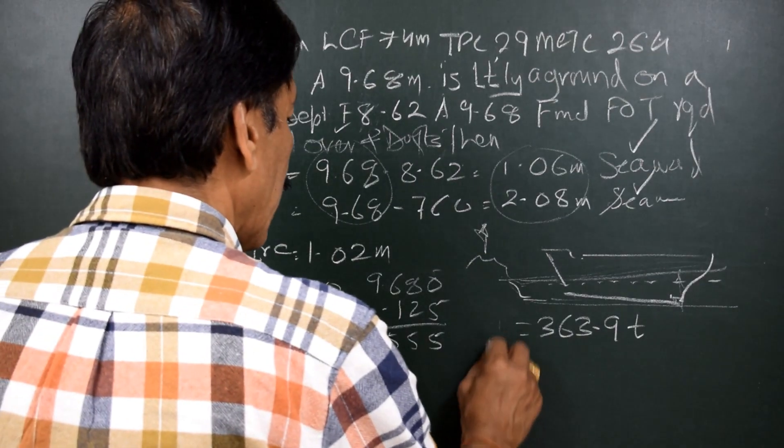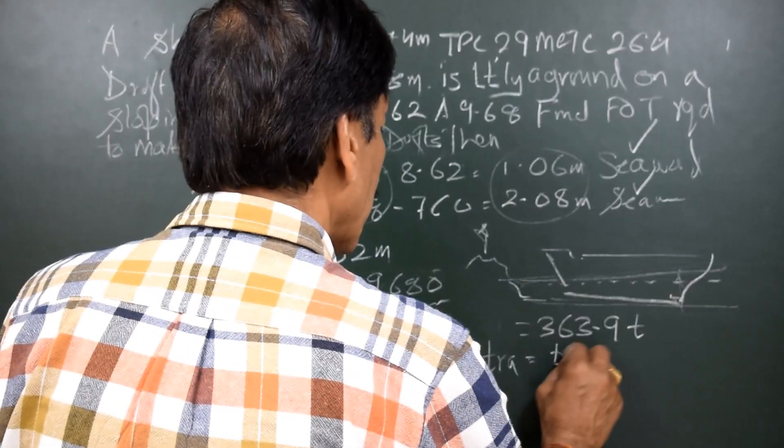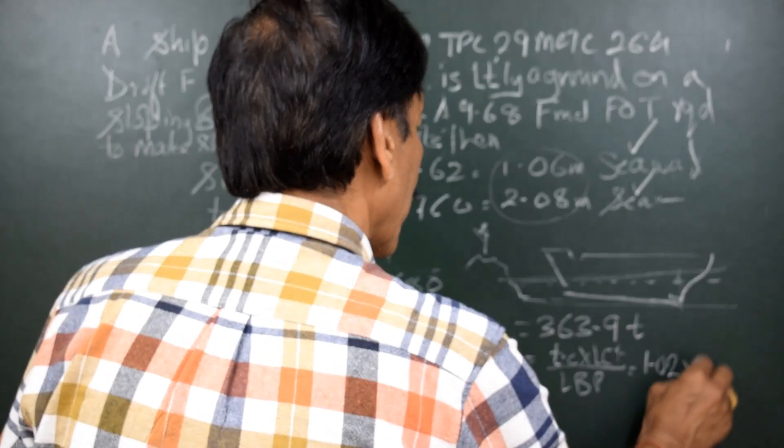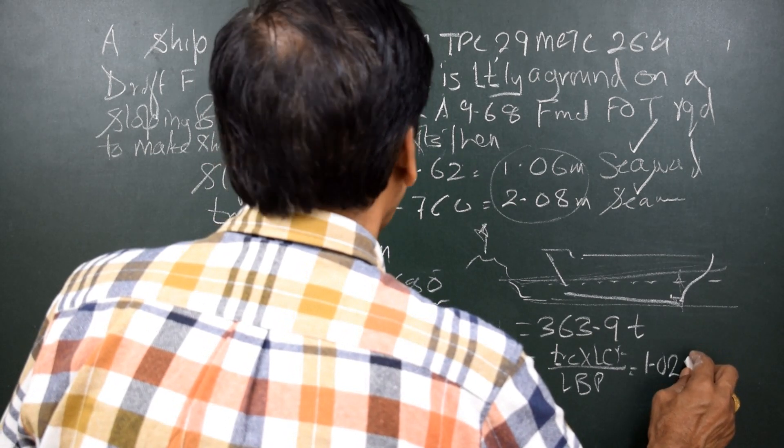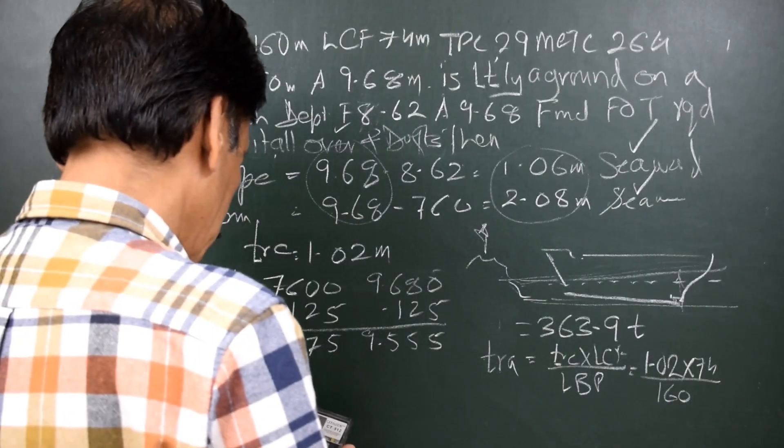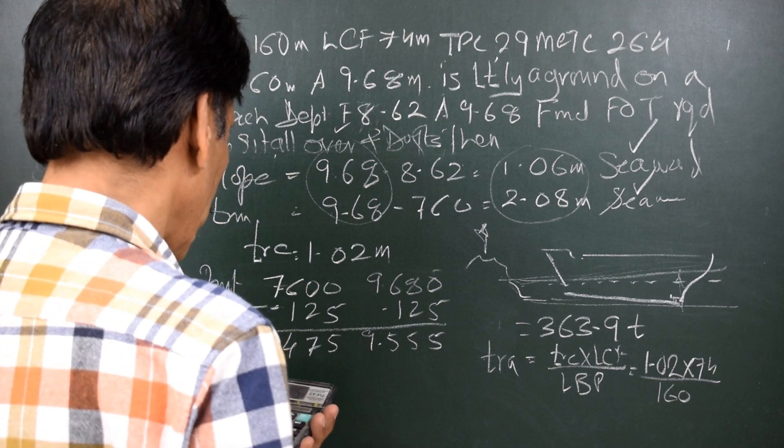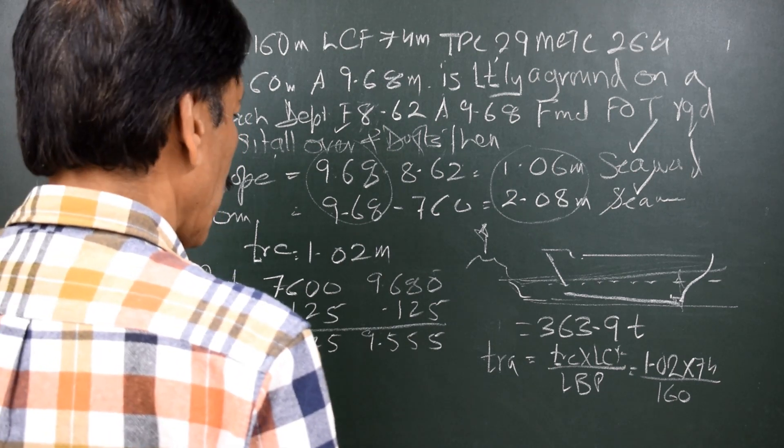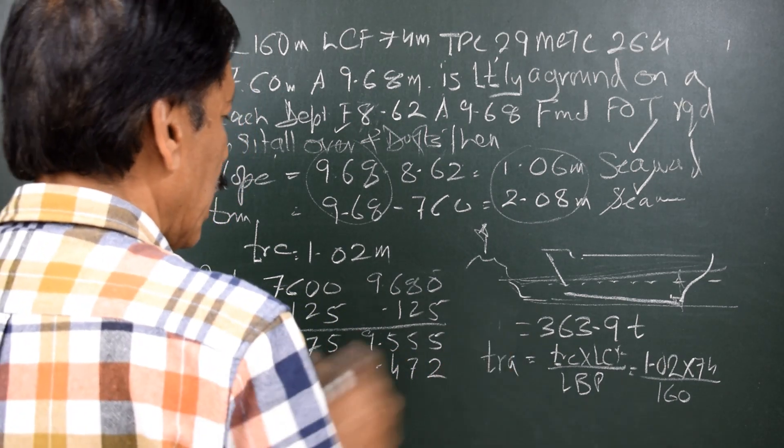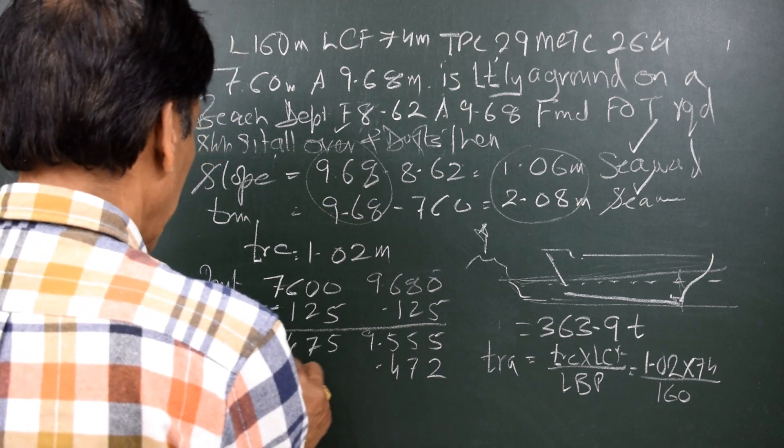This will cause change of raft. TRA is the change of raft aft caused because of trim change and that is equal to TRC into LCF upon LBP. That is equal to 1.02 into LCF, that is 74 divided by LBP, that is 160. 1.02 into 74 gives me 0.472, so TRA is 0.472. And to find out TRF, I subtract TRA from TRC as 1.02, gives me 0.548.